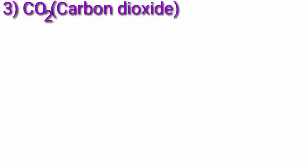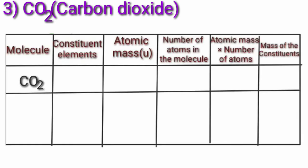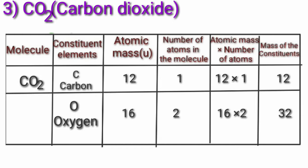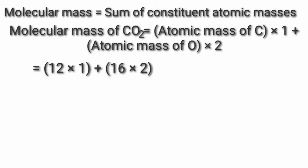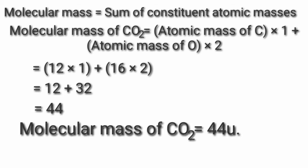Third, CO₂ — carbon dioxide. Constituent elements: carbon atomic mass 12, oxygen atomic mass 16. Molecular mass of CO₂ = (12×1) + (16×2) = 12 + 32 = 44. So molecular mass of CO₂ is equal to 44 U.